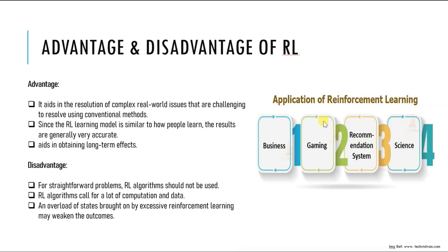The last application is resource management. Reinforcement learning has been used for resource management in energy systems, transportation systems, and communication networks. For example, it has been used to optimize traffic control systems, energy consumption in buildings, and wireless communication networks. These are all examples of resource management in a business domain. In the next video, we will implement and see different ways of implementing RL.